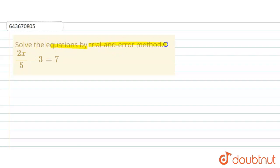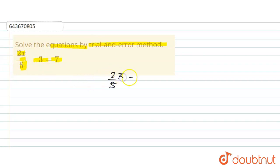Hello everyone. The question says: solve the equation by trial and error method — two upon five into x minus three is equal to seven. So here we will use the trial and error method: two upon five x minus three is equal to seven.